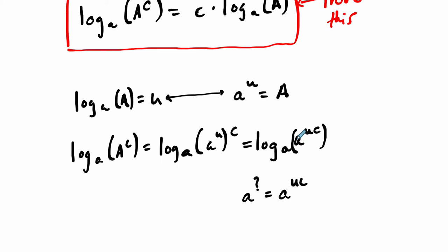So when I say log base a of A to the uC, that's got to equal uC. Little a to the power of uC does equal A to the power of uC. It's literally in the statement there.